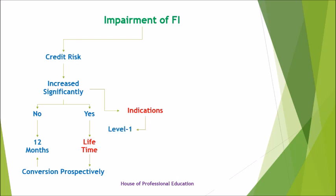There are three levels for determining a significant increase in credit risk. Level 1: rebuttable presumption that credit risk has increased significantly when contractual payments are more than 30 days past due. If there is no significant increase in credit risk, an entity shall measure the loss allowance at an amount equal to 12-month expected credit losses, and effective interest will be calculated on the gross carrying amount of the financial instrument before deducting expected losses. Level 2: when payments are 30 days past due, a financial asset is considered Level 2 and lifetime expected credit losses will be recognized, indicating a significant increase in credit risk.